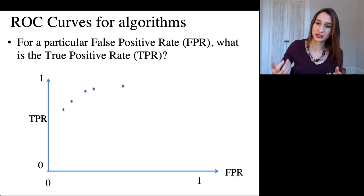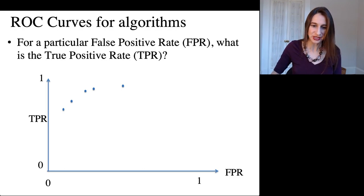And again, we can calculate the area under the curve as the AUC. It's like a single number to characterize the quality of that ROC curve.